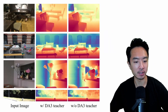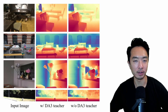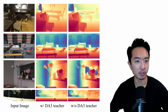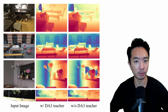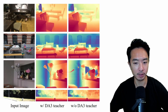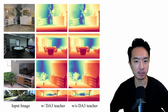Here are some more examples with and without the DA3 teacher. In the middle column with the DA3 teacher, you can look at the details of the chair compared with the right and left side. Also some of the details of the lamps — you can see each individual post of the lamp compared with the left. These are pretty nice results.